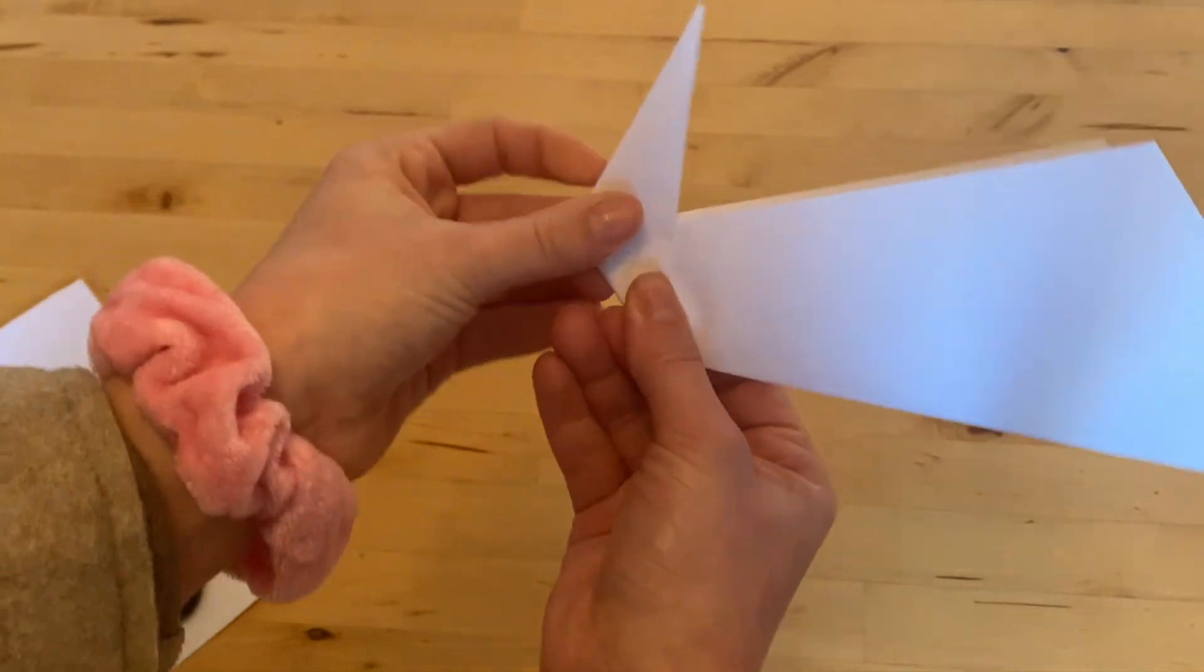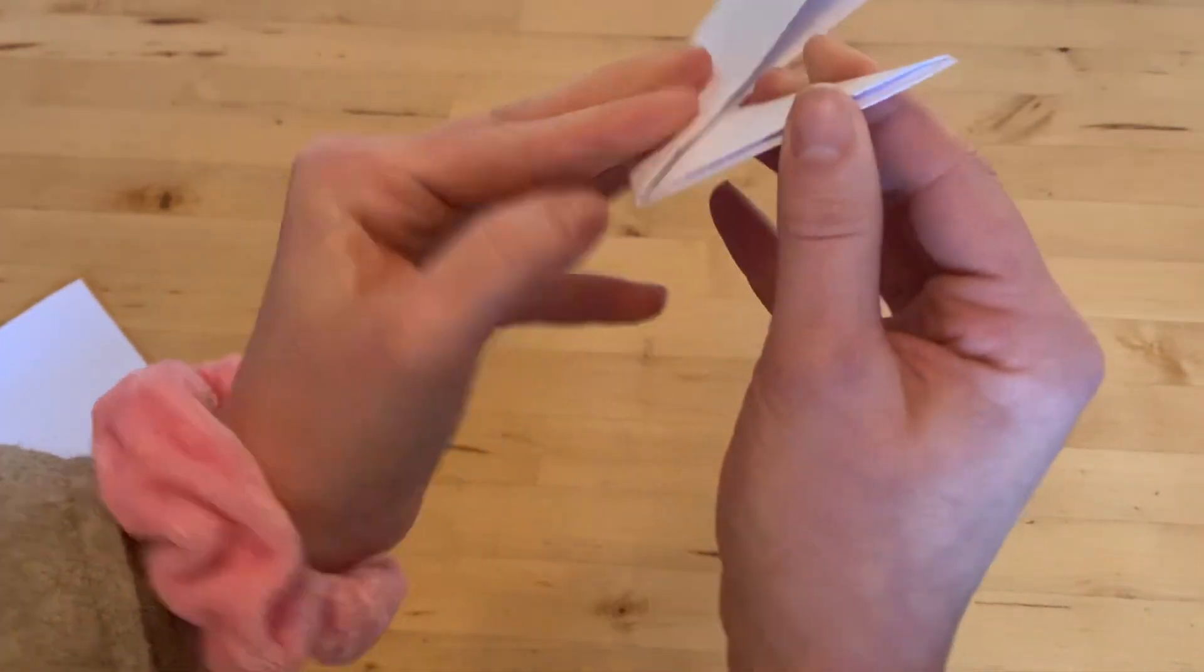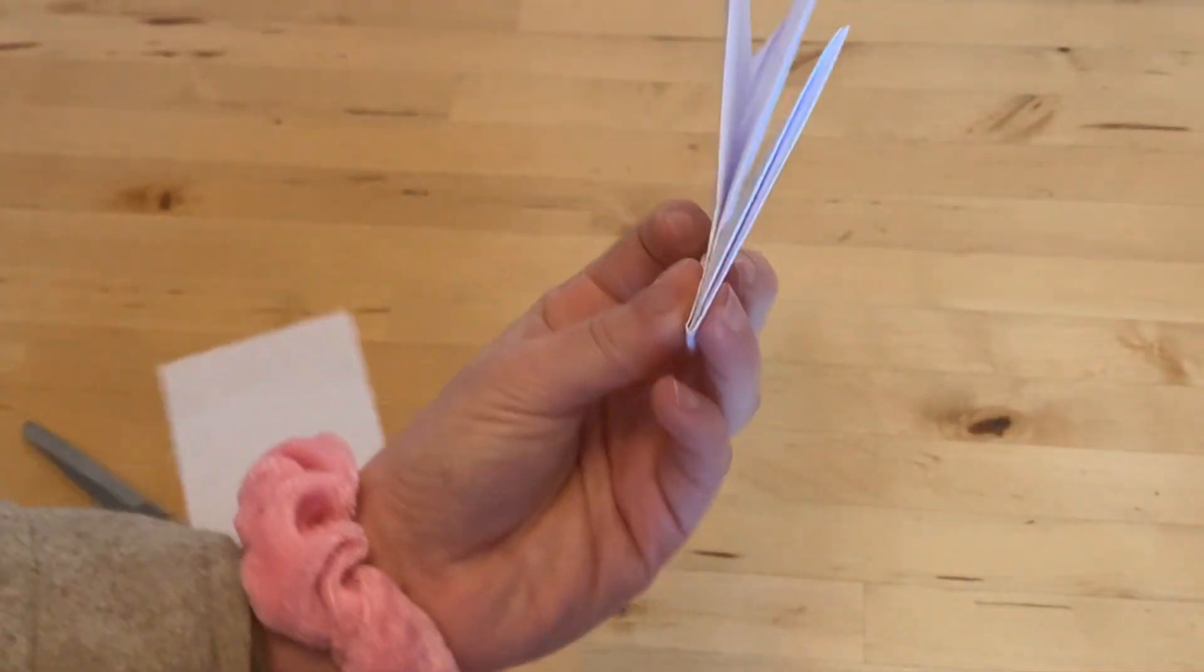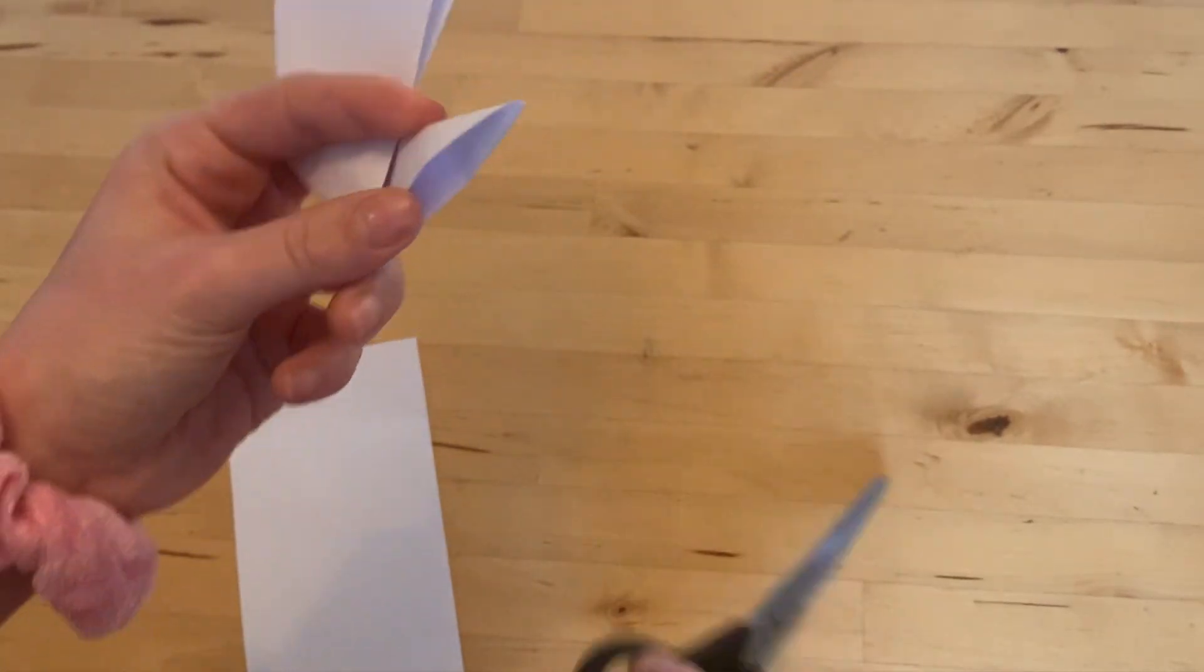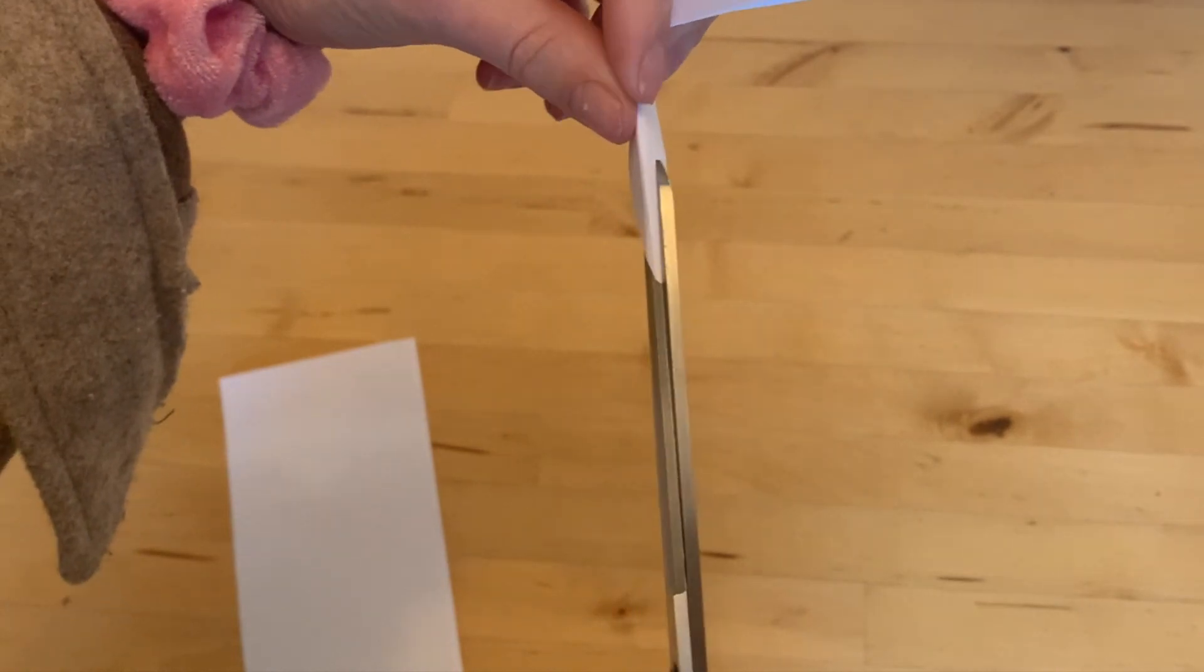So I'm going to fold up here and then carefully use my scissors to cut in the middle here. I'm not going to cut all the way. I'm just going to cut about one finger down the way.